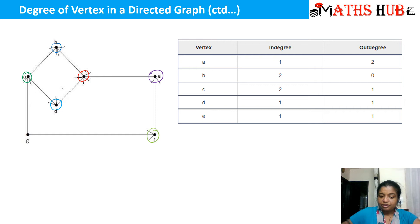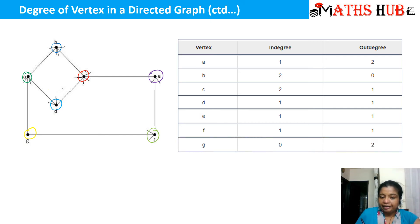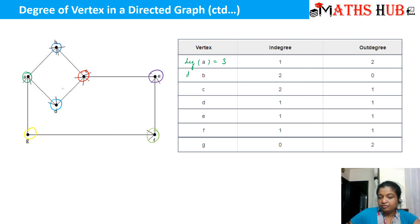For vertex F, one is moving in and one is moving out, so in-degree and out-degree are both 1. For vertex G, nothing is going inside but two edges are moving outside, so in-degree is 0 and out-degree is 2. The total degree of each vertex is in-degree plus out-degree: vertex A is 3, vertex B is 2, vertex C is 3, vertex D is 2, vertex E is 2, vertex F is 2.